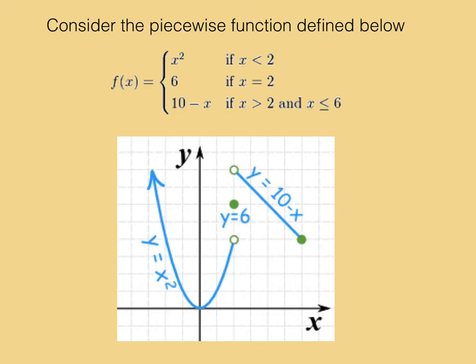Then we have f equals 6, which is just that single ordered pair. Then we have f equals negative x plus 10 for x is strictly greater than 2 but also less than or equal to 6. The y-intercept of that linear function, that third piece, would be 10 and the slope is negative 1.